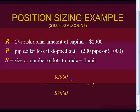So 2,000 divided by 2,000 automatically gives us a size of one unit. This is a simple example, and we're working through it so you understand the process. We have a $100,000 account, 2% equals $2,000, and if we got stopped out our dollar amount would be $2,000. We divide R by P: 2,000 divided by 2,000 equals 1.